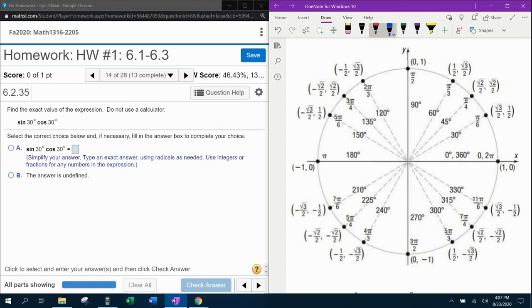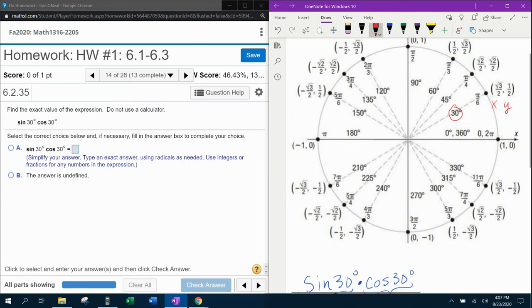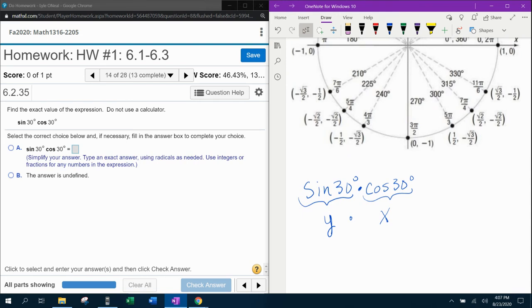So here we go with red. This is 30 degrees. We can see that the x is square root of 3 over 2 and the y is a half. So we're going to do y is a half. X is square root of 3 over 2.